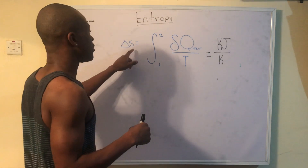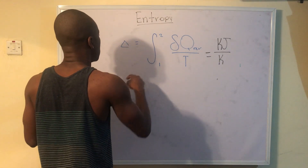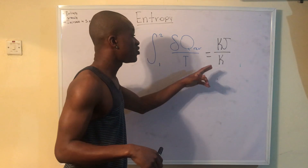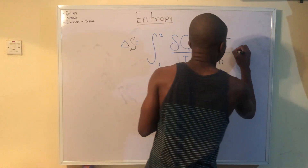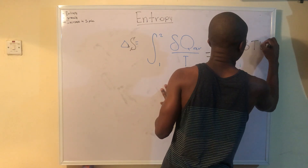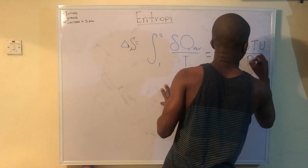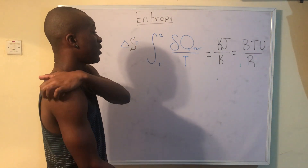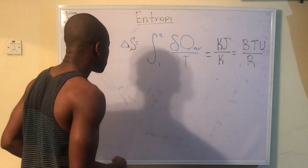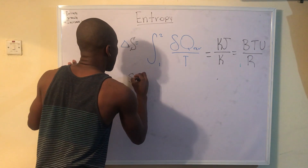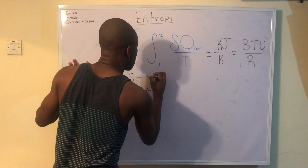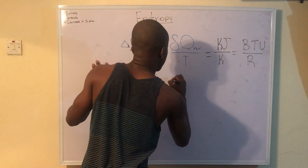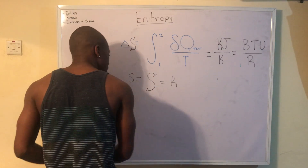We denote entropy with S — that should be a capital S, as it could be mistaken for a small s — and it's measured in kilojoules per Kelvin. You might also see British thermal units per Rankine. It's good to know it represents heat transfer per temperature. You might also encounter specific entropy, and sometimes it's just called entropy — you'll know from context which one is meant.